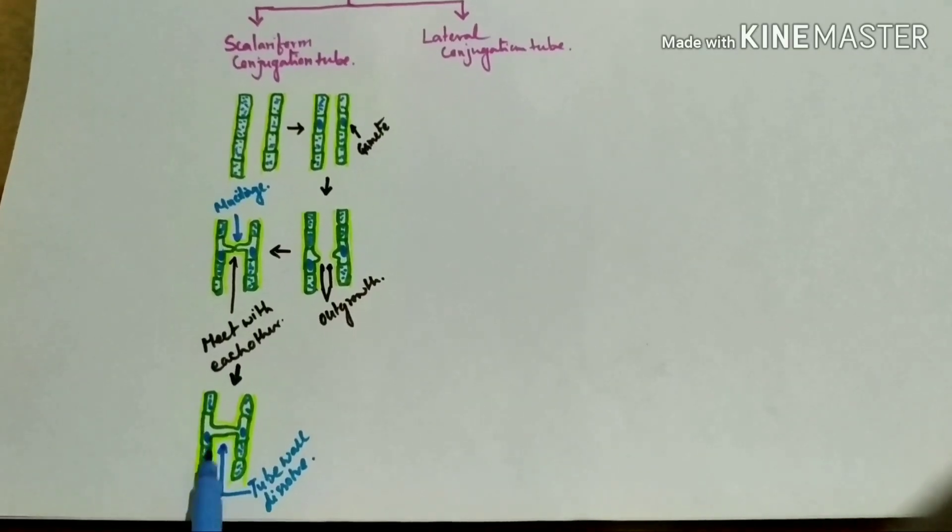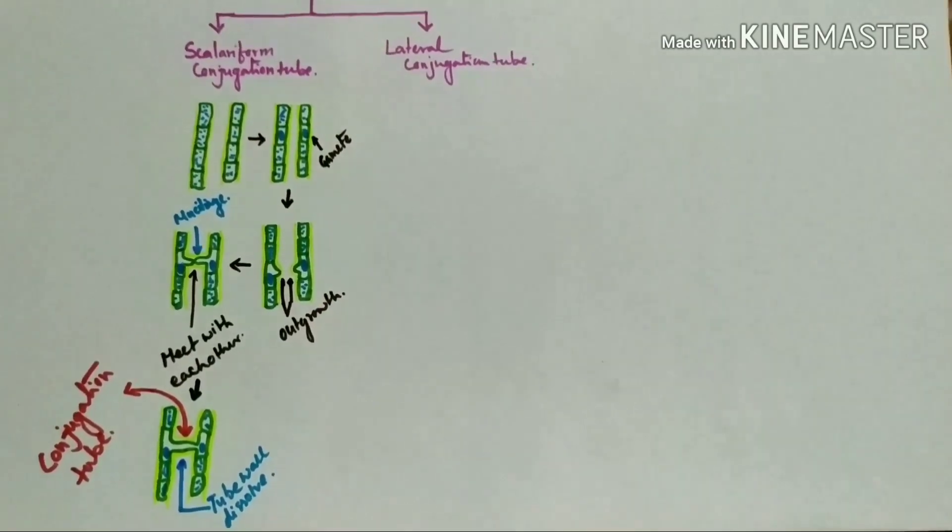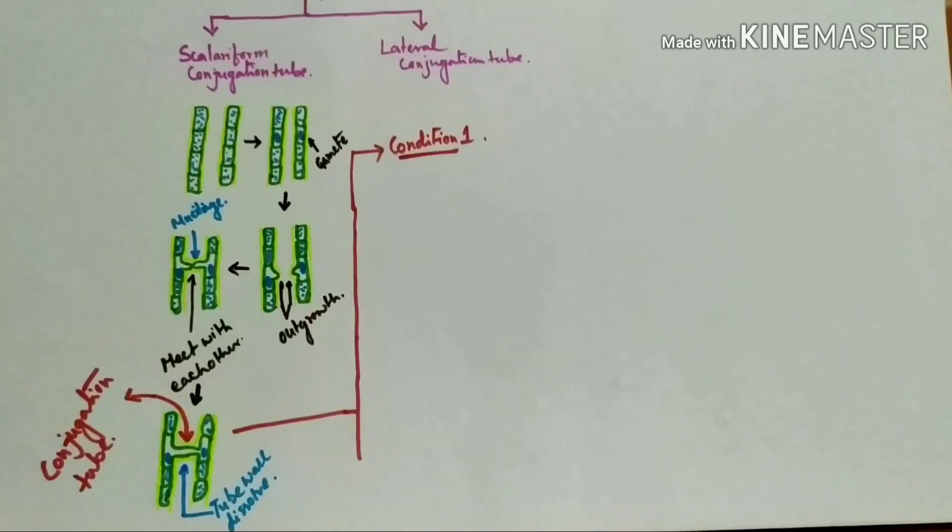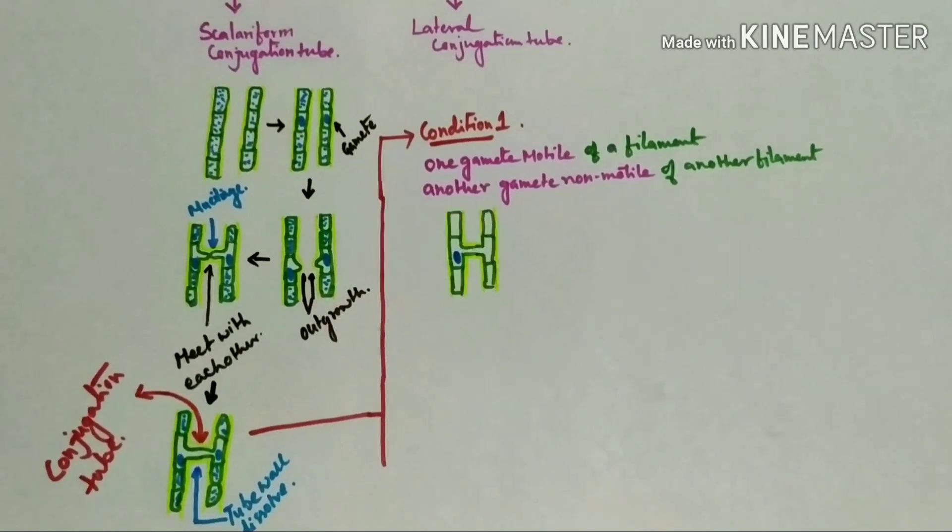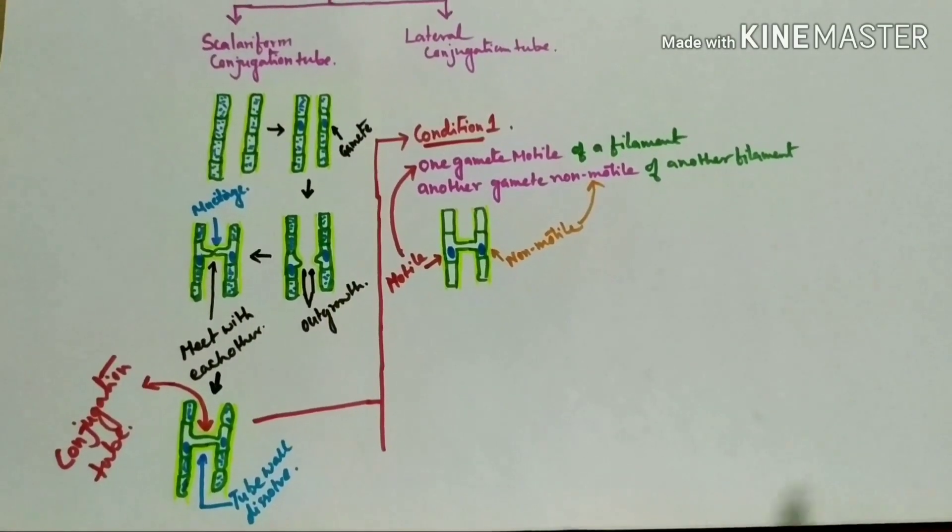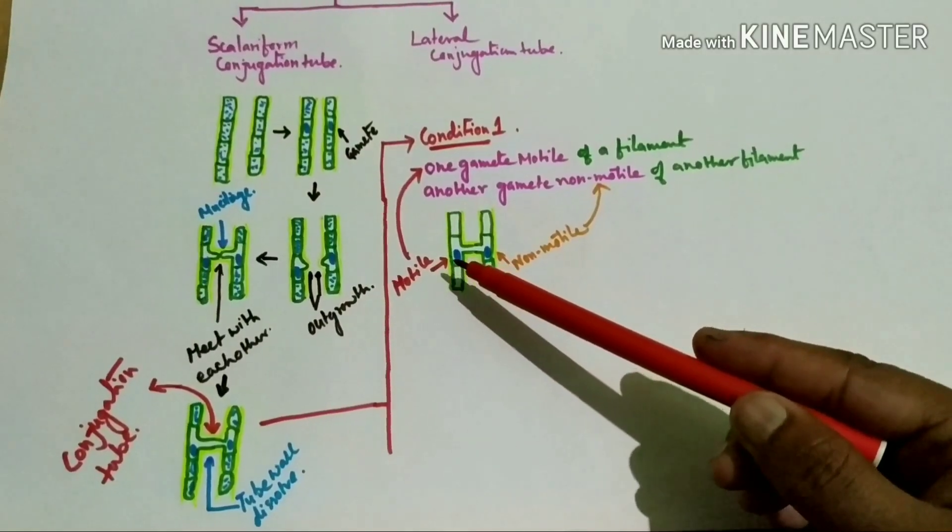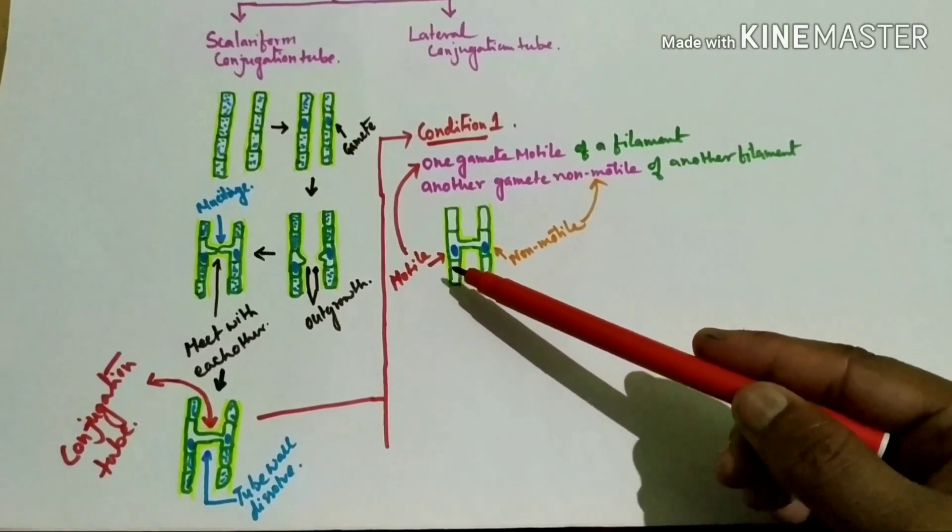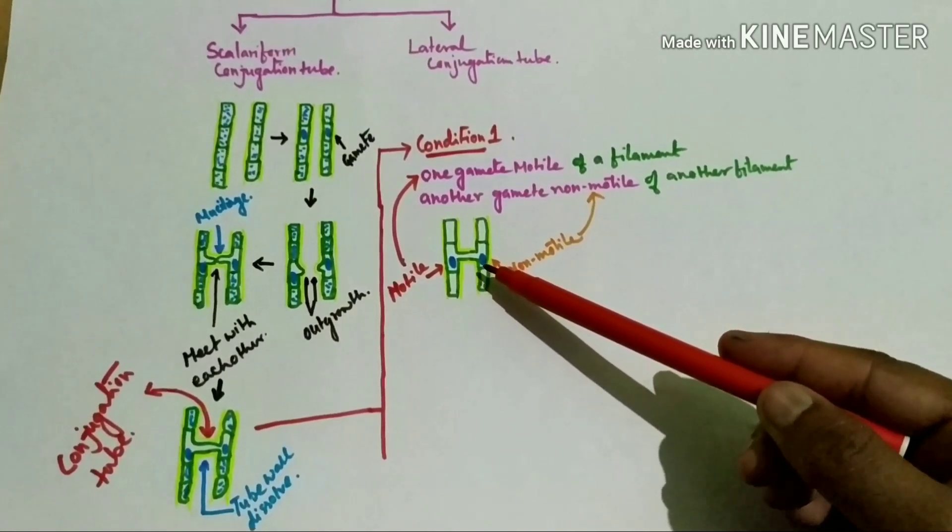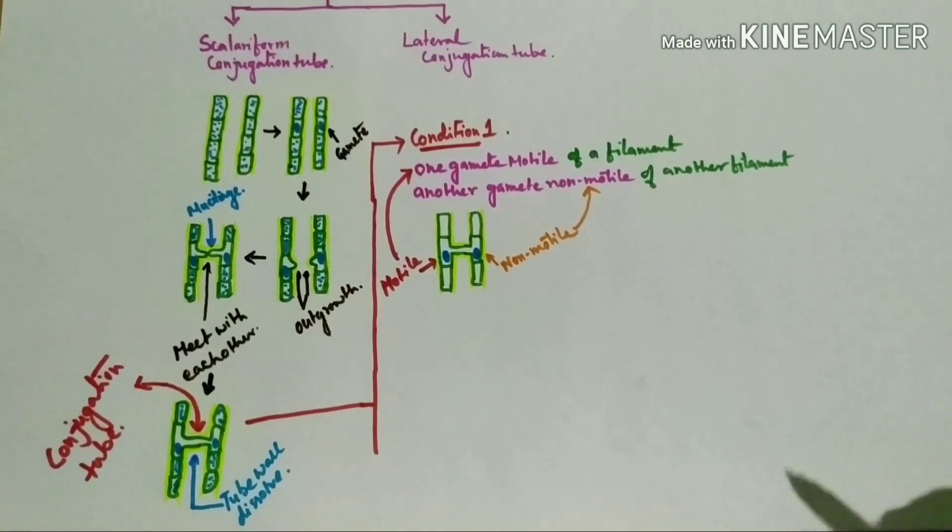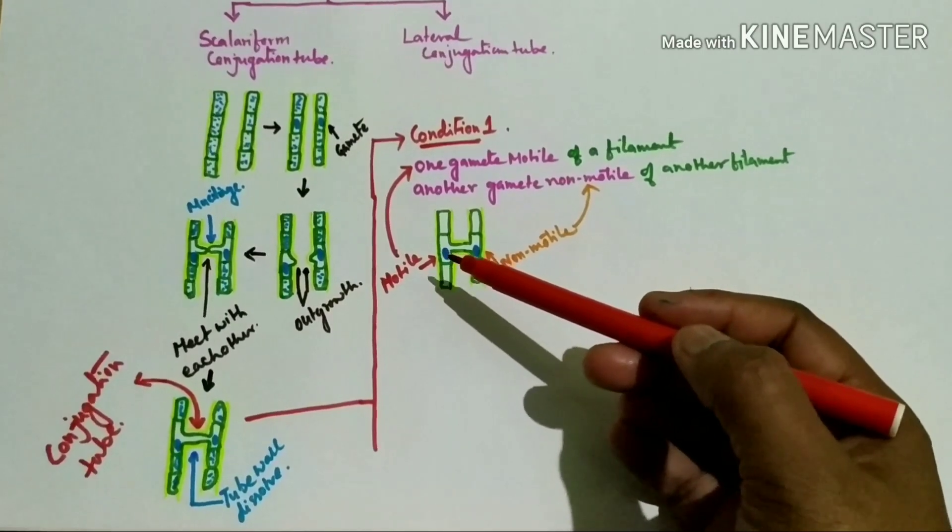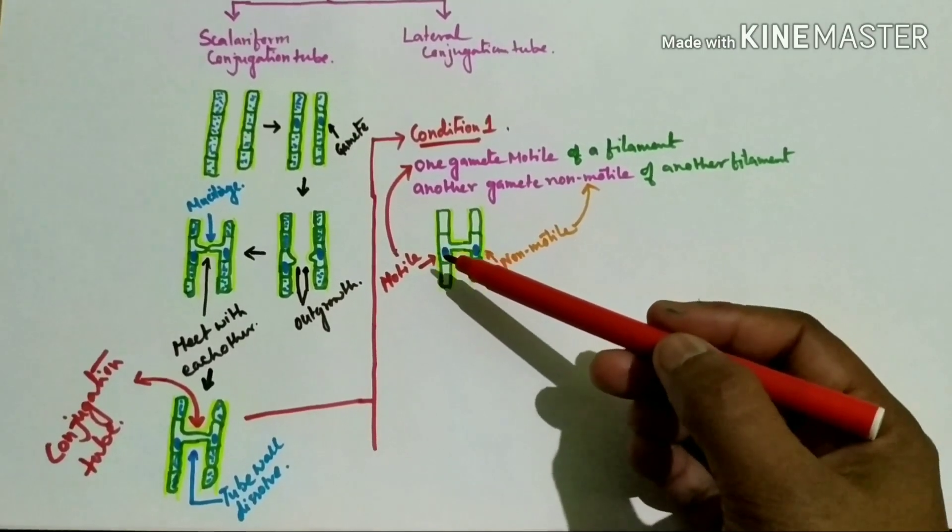Now there are two conditions present. In condition 1: one gamete is motile of a filament. So this is motile gamete and this is non-motile gamete. So motile gamete is active gamete and non-motile gamete is inactive gamete. Here both gametes are equal in size and shape.